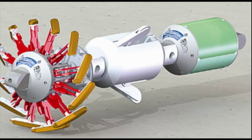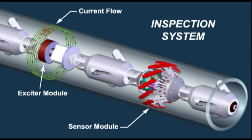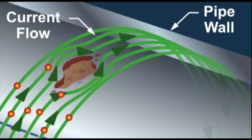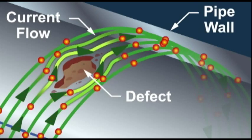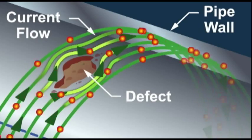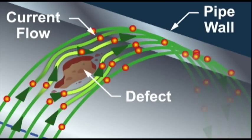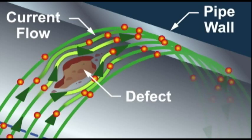We're using a method called remote field eddy current, or RFEC for short. It makes use of a low frequency alternating magnetic field. This induces the flow of currents in the pipe wall, and these currents are disturbed by the presence of corrosion, and that's picked up by our sensors.